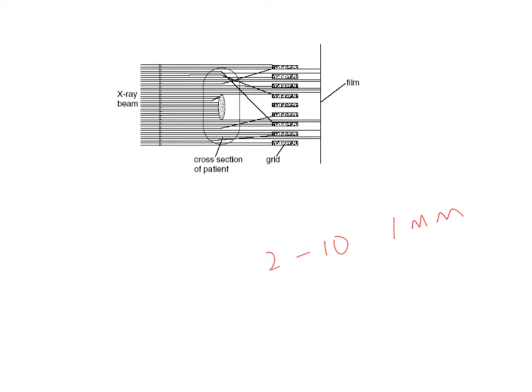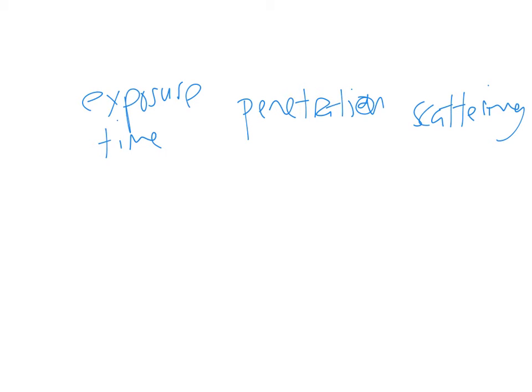That is sharpness. Now, what about contrast? Contrast is defined as the difference in the degree of blackening between the different regions. So what are the factors that affect contrast? There are actually three: exposure time, penetration, and scattering. Why does exposure time affect your contrast? Remember the area behind your bone will always remain white. But the area behind your flesh will keep getting darker. So the longer you wait, the area behind the flesh gets darker and darker, so you get better contrast.